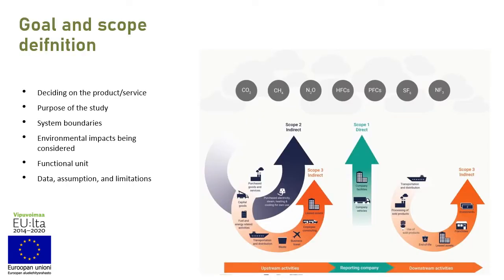In the first stage, goal and scope definition, we decide our system — is it a product, a service, an activity? We define the purpose of the study: are we going to compare two different products or find an environmental hotspot from a certain process? Then we set the system boundary. There is scope one — direct emissions from the manufacturing side — and we can also expand to scope two and scope three, including upstream activities like raw material extraction and transportation, as well as downstream activities like waste management of the disposed product.